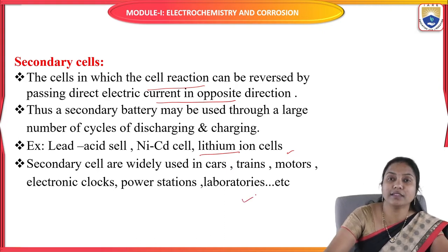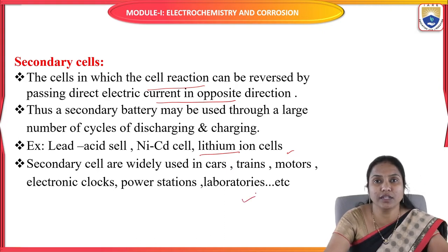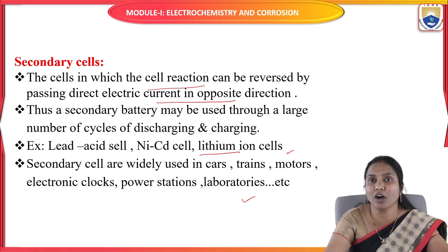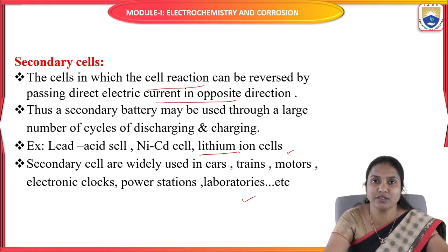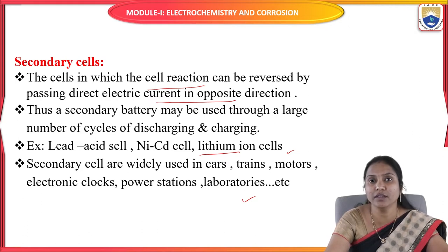Lithium batteries are the best example of a primary battery — in that battery, lithium acts as anode. But in the lithium-ion battery, which is a secondary battery, lithium acts as cathode. That is the main difference between lithium and lithium-ion battery. Secondary batteries are used in cars, trains, motors, automobiles, power stations, laboratories, and hospitals.